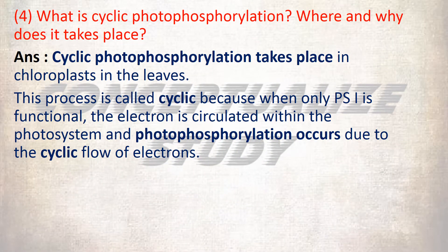Our next question is: what is cyclic photophosphorylation, and where and why does it take place? Cyclic photophosphorylation takes place in chloroplasts in the leaves. This process is called cyclic because when only PS1, or photosystem 1, is functional, the electron is circulated within the photosystem and photophosphorylation occurs due to the cyclic flow of electrons.